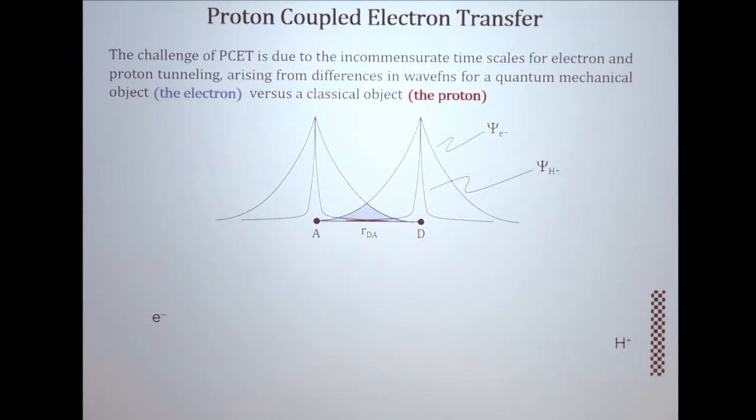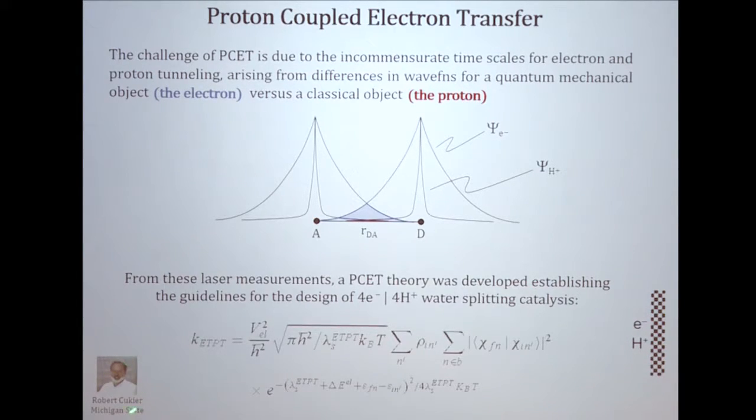So we needed to understand this problem to design catalysts that could split water in an energy efficient way. The idea we had is, if the electron can move a long distance and the proton can only move a short distance, we would start the electron way over here. This is the finish line in a molecule. We would build a molecule where the electron would start way over there. The proton would start right near the finish line. And then when we hit it with a fast laser, the electron and proton would arrive at the same point at the same time. And when they arrived there, we could start building a theory and understand how electrons talk to protons. We did this with Bob Kukie at Michigan State, designing the first theories using these laser experiments.